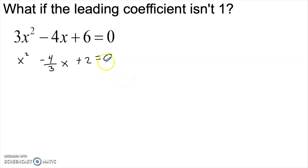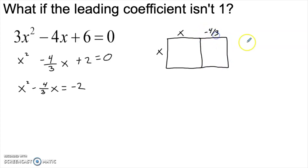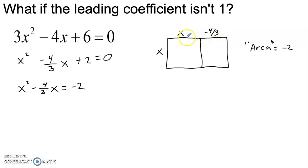So let's start by dividing everything by 3, because it would be nicer if this was just 1x squared. Just as before, I don't want it equal to 0 — I want to get this constant term over here. So I have a square and a rectangle, and then the area, quote unquote, over here. So we have the x by x square, and then the negative 4 thirds by x rectangle, and the area, quote unquote, is negative 2. Again, let this negative length just be okay for now. It's a lot easier to draw the picture this way than it is to try to subtract it from the square. It will work out in the end.